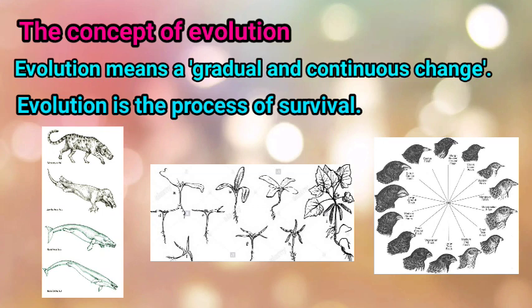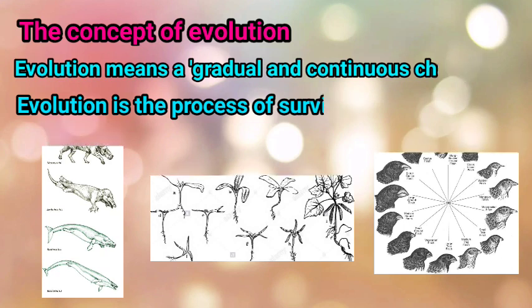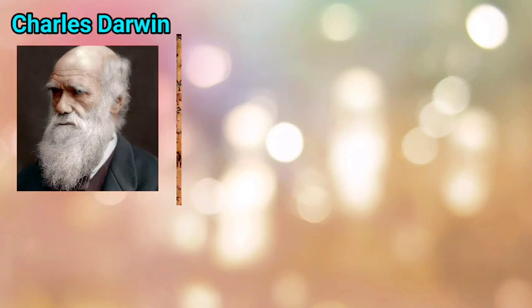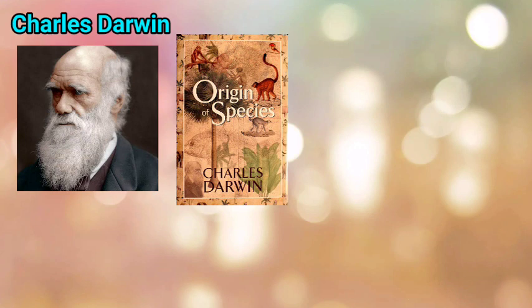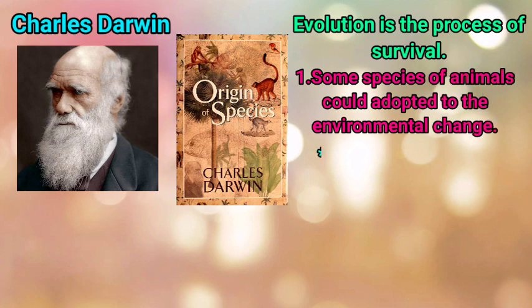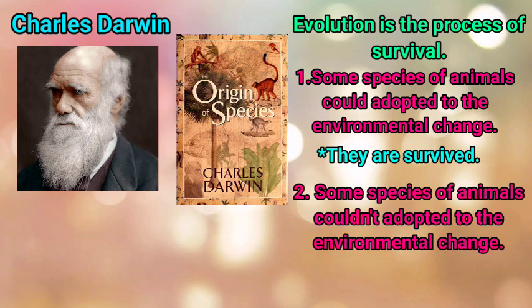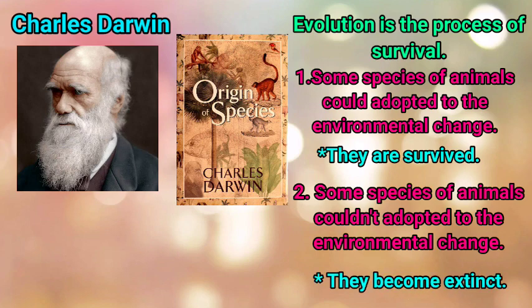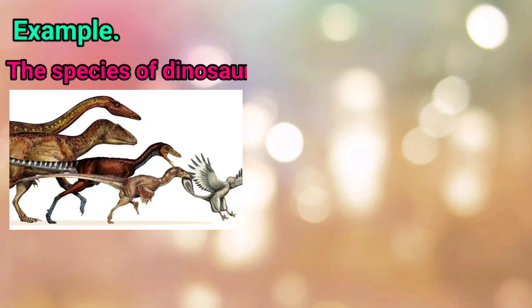Charles Darwin was the first scientist to give a systematic explanation of the concept of evolution. Basically, this is the process of survival — the species of animals which could adapt to environmental changes survived, while those which could not adapt to environmental changes became extinct. This is the process of evolution.